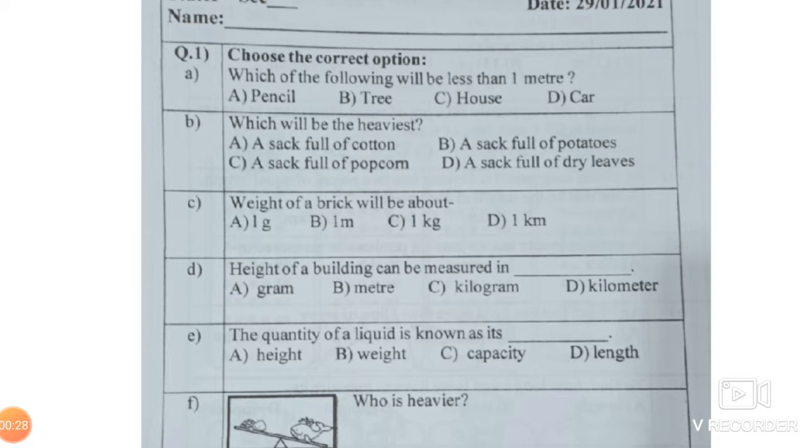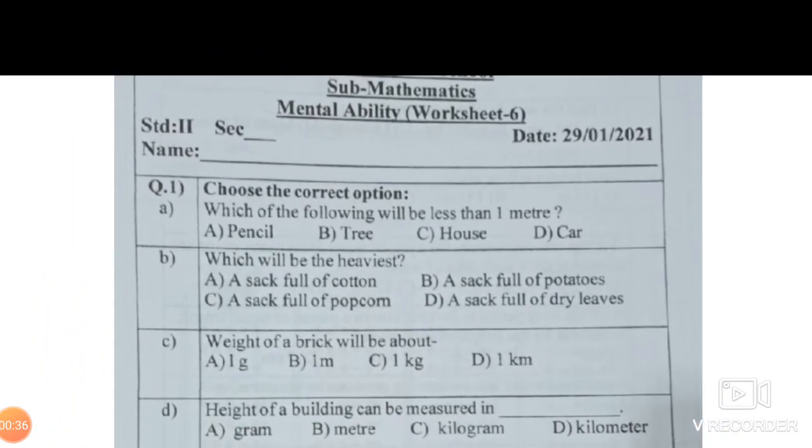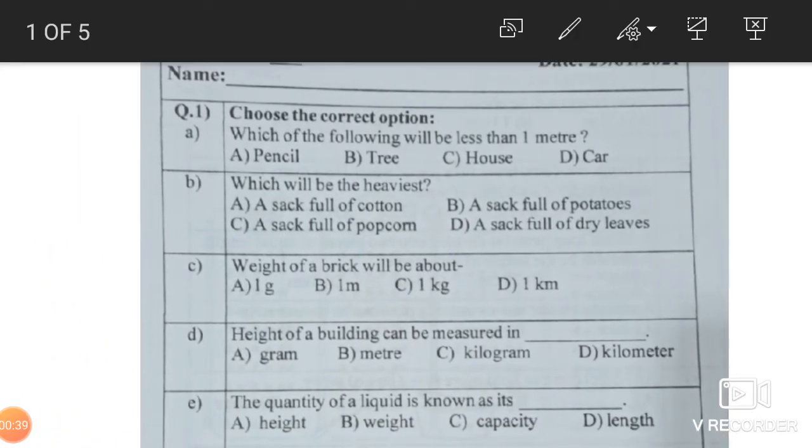First I am going to explain the mental ability. Mental ability means wherein four options, four answers are given to you, you have to select the correct one. As I am reading the question I will explain simultaneously. Please be ready with your worksheet. If you are not able to see it clearly you can refer to the worksheet and solve with me. First question: which of the following will be less than one meter? Pencil, tree, house or car. See, a car, house and tree will be in meters, so which is the least? The answer is pencil.